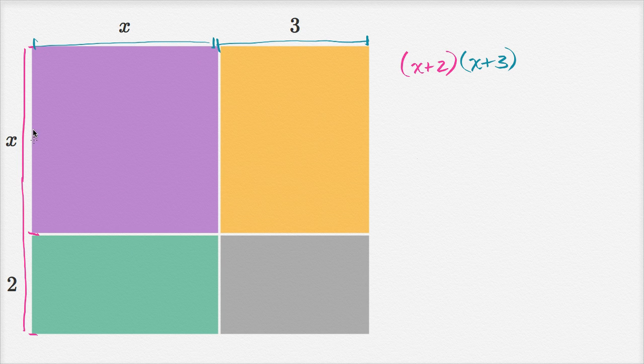Well, the purple rectangle, its height is x, and its width is x. So its area is x squared. Let me write that, that's x squared.